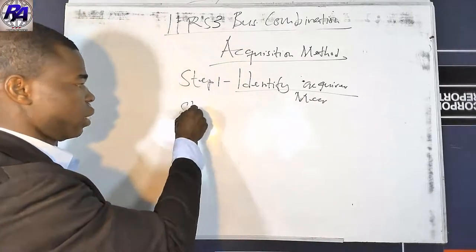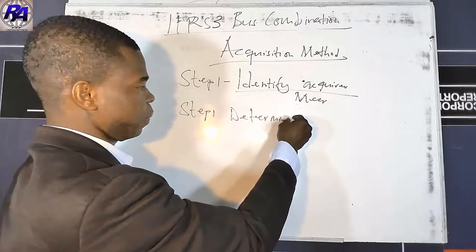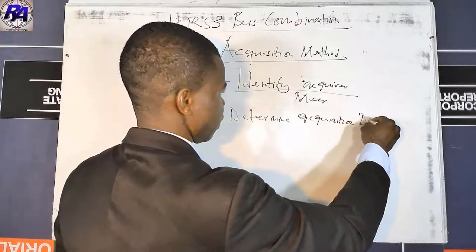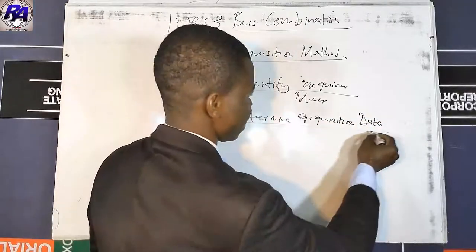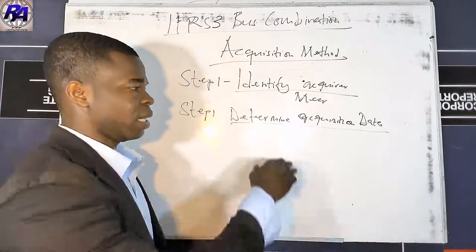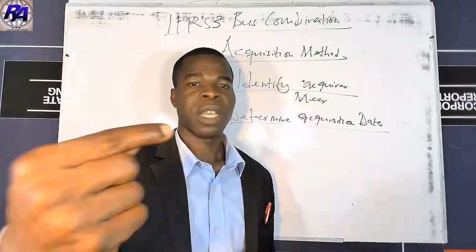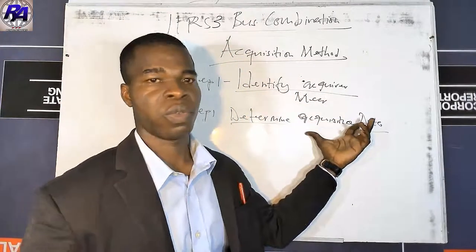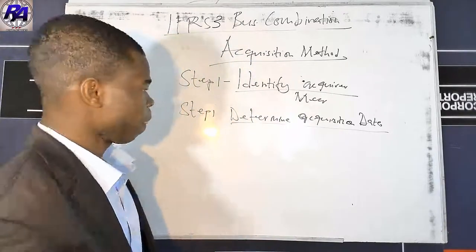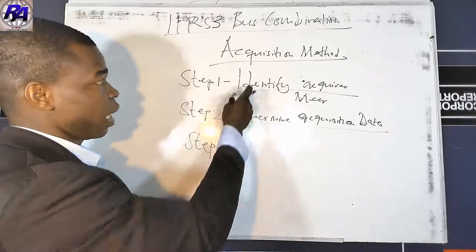Step two is to determine the acquisition date, which is the date that the acquirer has obtained control over the other entity. This is mostly the reporting date, but it may differ depending on when the acquirer actually obtains control.